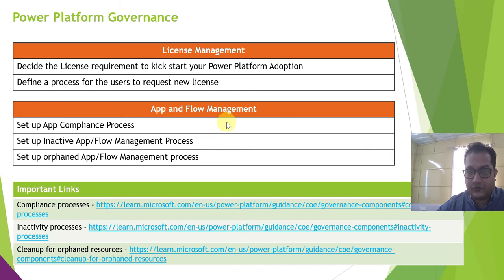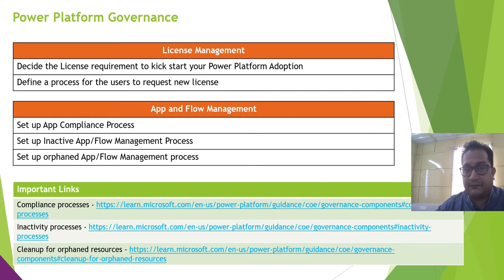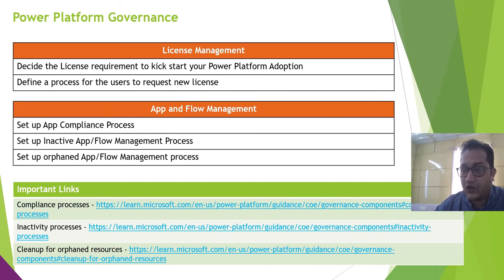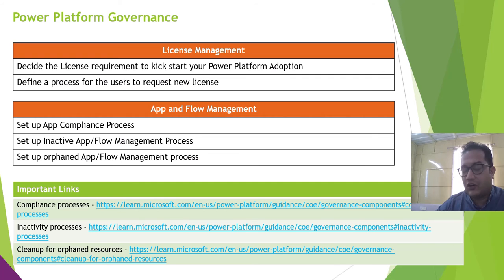Next is app and flow management. You create multiple apps and multiple flows in Power Automate, so there should be policies related to those as well. You can set up an app compliance process, an inactive app or flow management process, and an orphaned app and flow management process. Many times citizen developers or pro developers create apps for testing that remain inactive or orphaned for many months or years, so you should set up compliance policies for those.